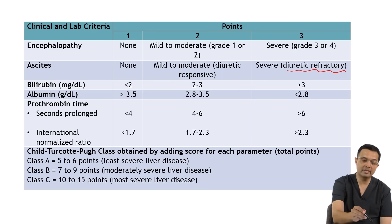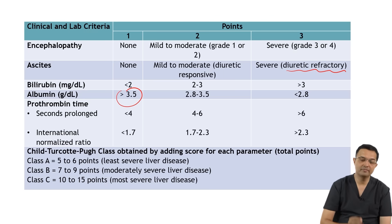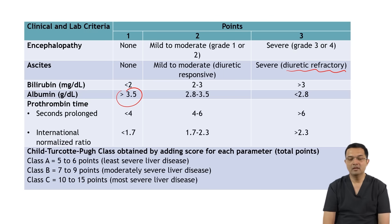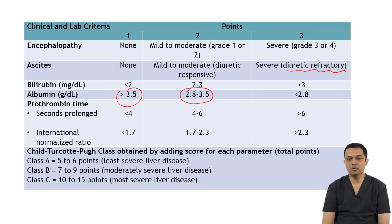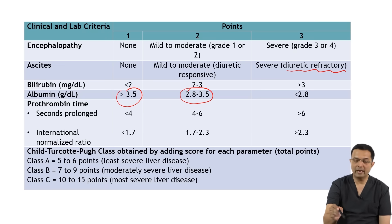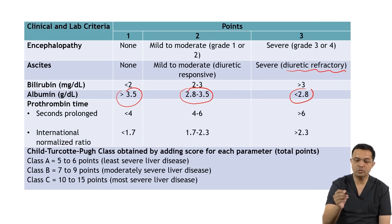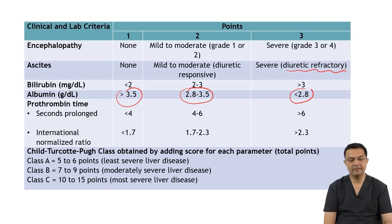For albumin: more than 3.5 g/dL, the score given is 1; albumin between 2.8 to 3.5 g/dL, the score given is 2; and albumin less than 2.8 g/dL, the score given is 3.